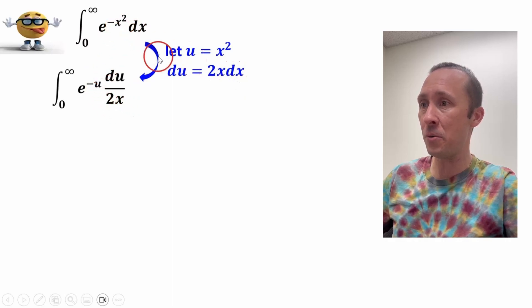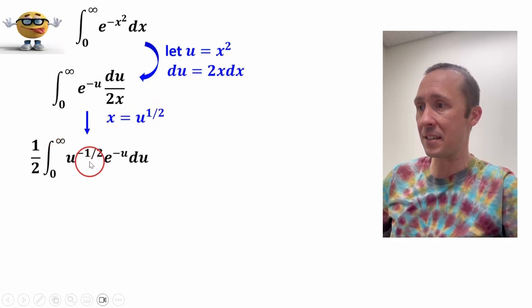So x squared is u, and if we solve for dx, dx equals du divided by 2x, so that's what we have here. And now x is equal to the square root of u, so we can substitute that in to give us this expression right here.